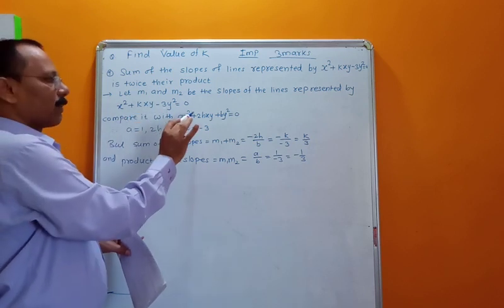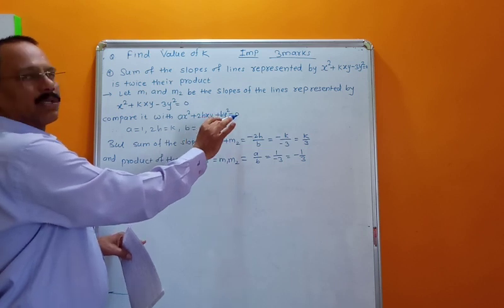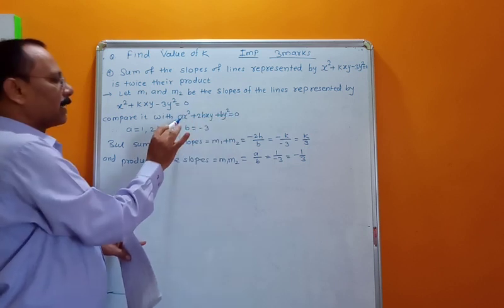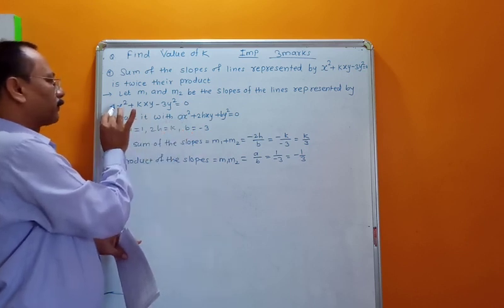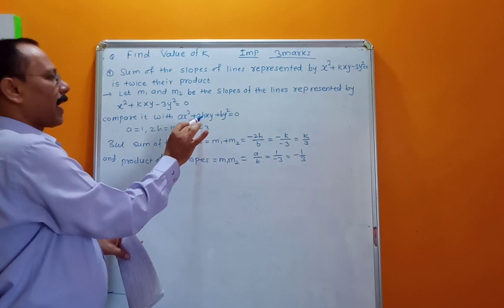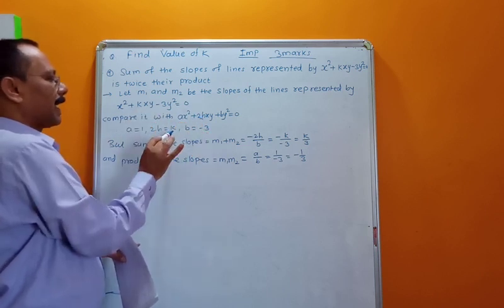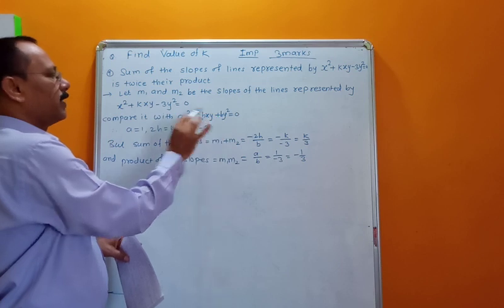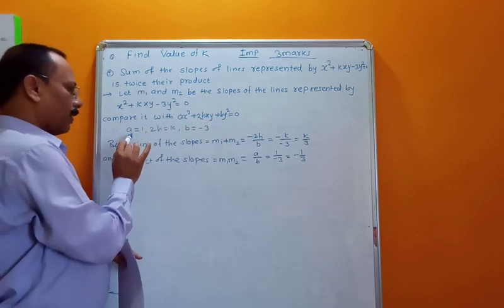We compare this equation with the general equation ax² + 2hxy + by² = 0. The coefficient of x² gives a = 1, the coefficient of xy gives 2h = k, and the coefficient of y² gives b = −3.